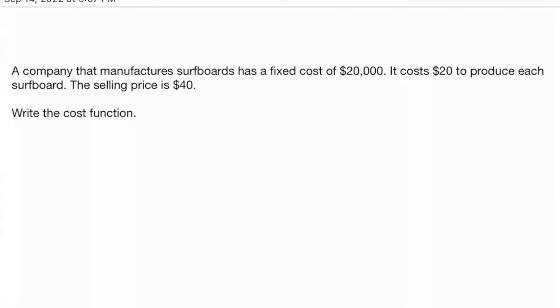A company that manufactures surfboards has a fixed cost of $20,000. It costs $20 to produce each surfboard. The selling price is $40.